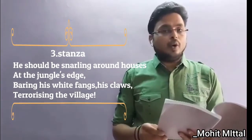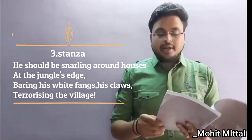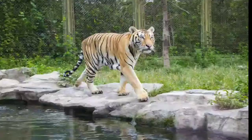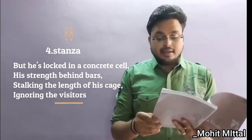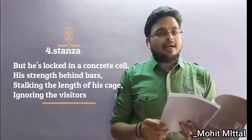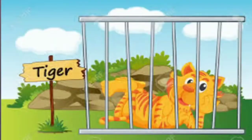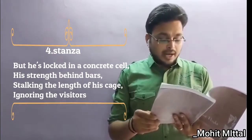The tiger should be glowing in the night to terrify people — somewhere the tiger should show its rageous nature. But instead, he is locked in a concrete cell. The poet expresses deep sympathy here — the tiger is bounded within the four walls of the cage.